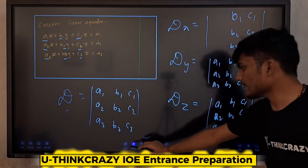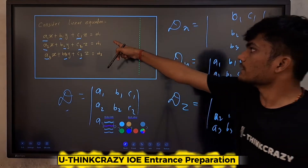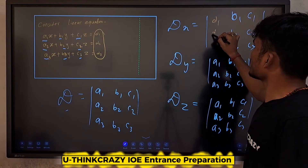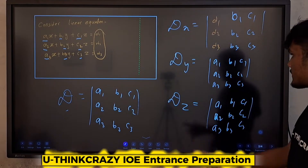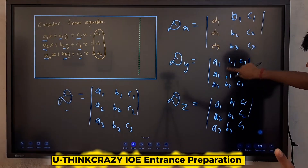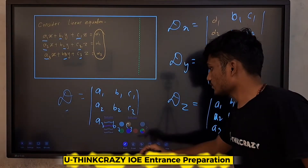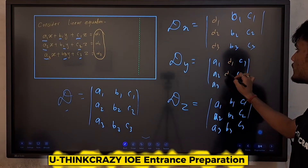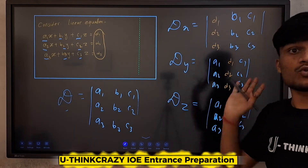Write b1 here, write d1, d2, d3. For Dy, replace the y-column. The rule is: d1, d2, d3 — everything else stays the same.